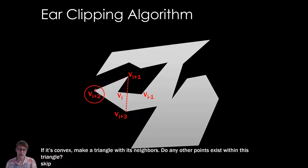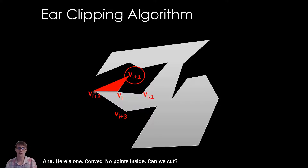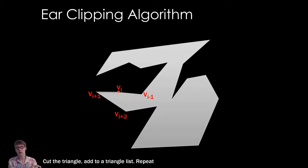To reiterate: I made a triangle with the vertex before and the vertex after, then tested all other vertices — are any inside my triangle? If someone's inside my triangle, then I have a blank region and can't turn this into a triangle in my shape. But if it's convex and no other vertices are inside, I can cut this off and put it in a triangle list to draw later.